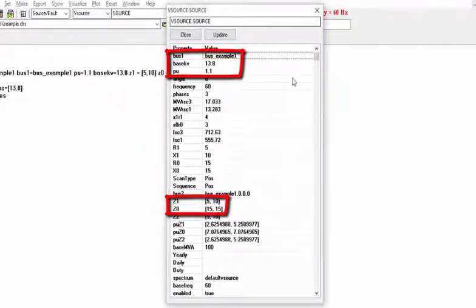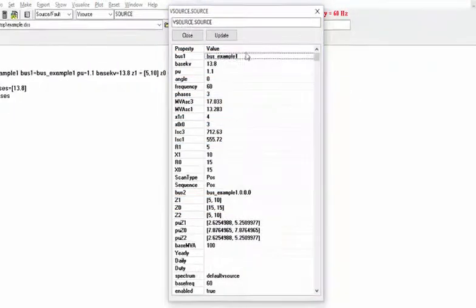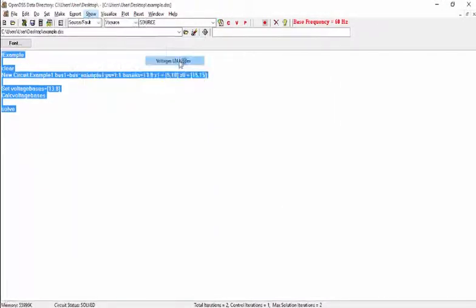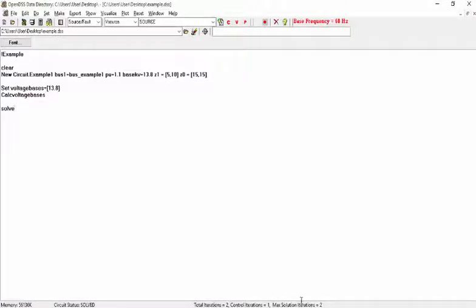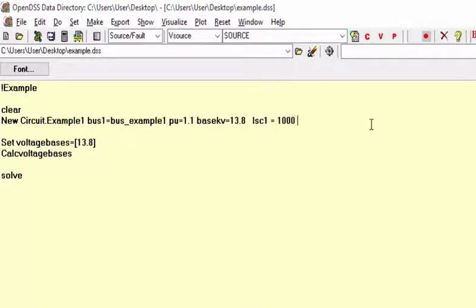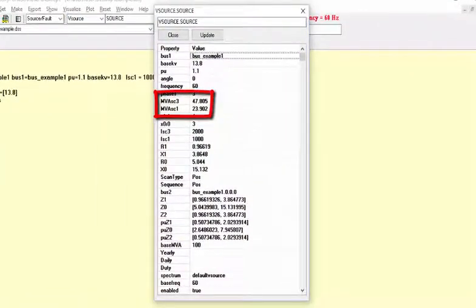As you can see, all of them are matching with what we have defined. The values of the pair MVASC3, MVASC1, and ISC3, ISC1 were calculated based on Z0 and Z1 that we have defined. If we go to show and line-to-neutral voltage, we can see that the actual voltages are in accordance with the PU value of 1.1 that we have defined. You can also use ISC1 and ISC3 instead of Z1 and Z0. Let's set ISC1 equal to 1000 and ISC3 equal to 2000, for example.